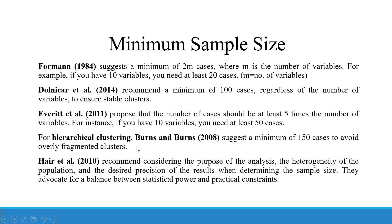For hierarchical clustering, Burns and Burns suggest a minimum of 150 cases to avoid overly fragmented clusters. Hair recommends considering the purpose of the analysis, the heterogeneity of the population, and the desired precision of the results when determining the sample size, advocating for a balance between statistical power and practical constraints.